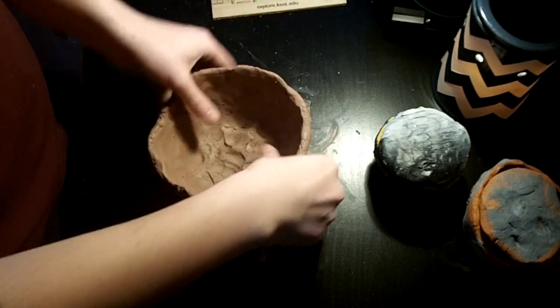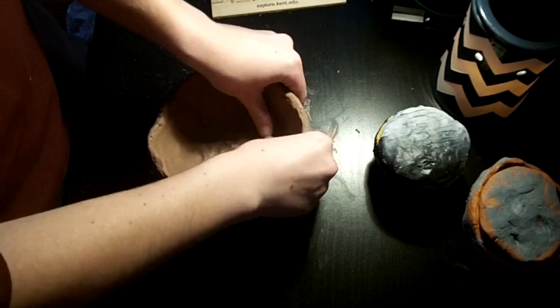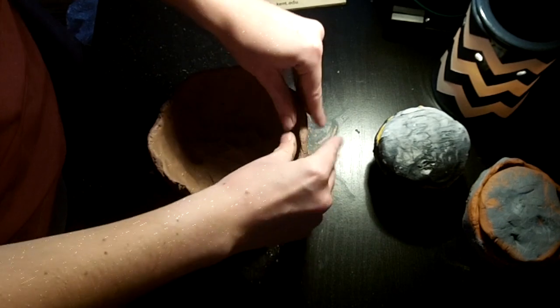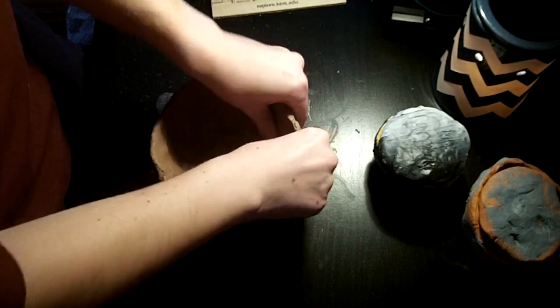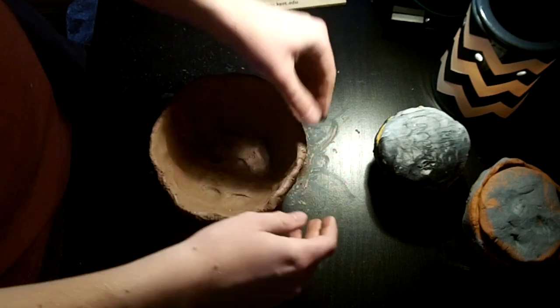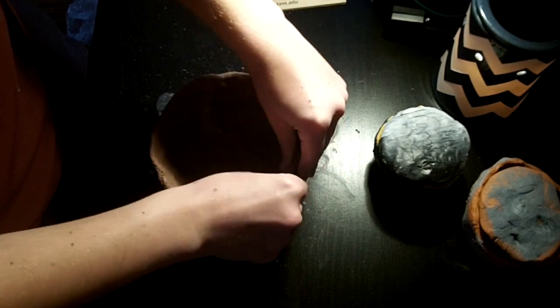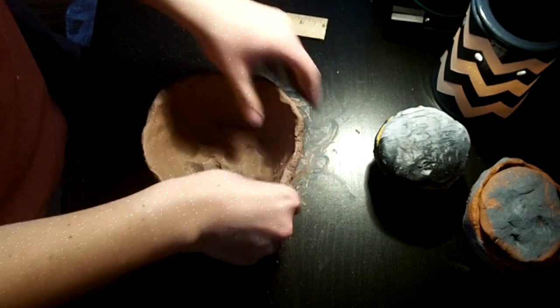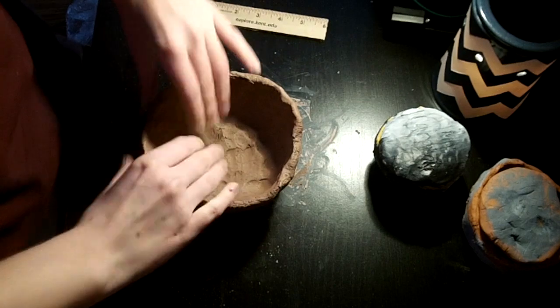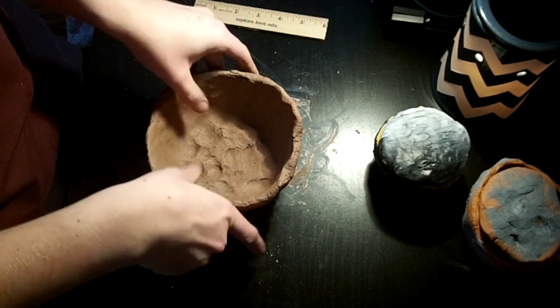And something else that I don't want to see is paper-thin walls. If you have paper-thin walls, then once it dries out, all of the water is going to come out of your clay, and it's just going to crumble and fall apart. So you really want to try to stick to that quarter-inch thickness all the way around, and keep that shape as much as possible.